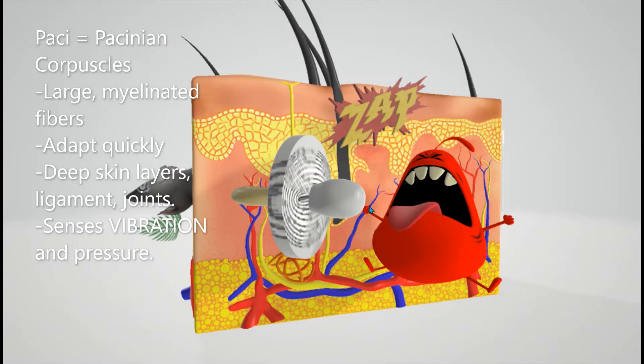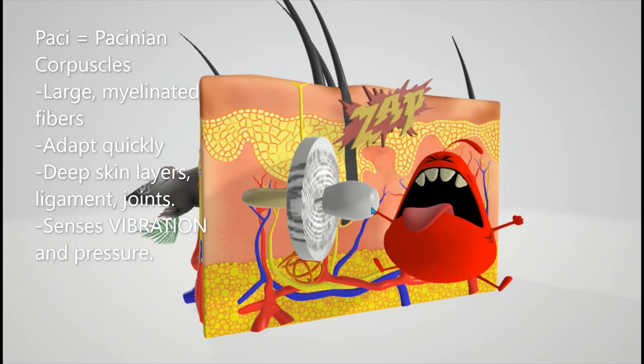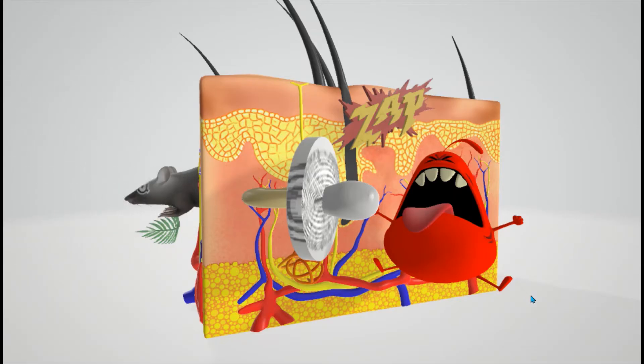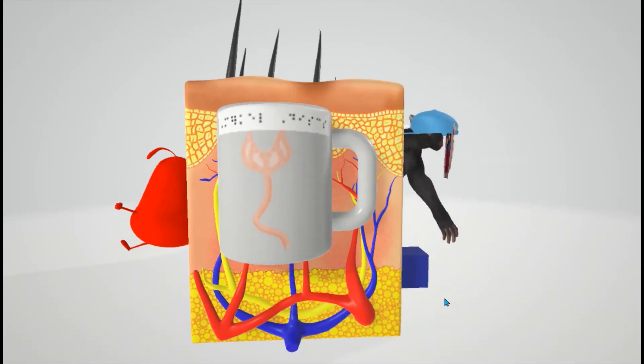It causes so much pressure. It helps me remember that Pacinian corpuscles are involved in vibration and pressure in the deep skin layers and ligaments and joints. They're myelinated, and that's why they made the pacifier white. They adapt quickly. This guy's moving quickly.